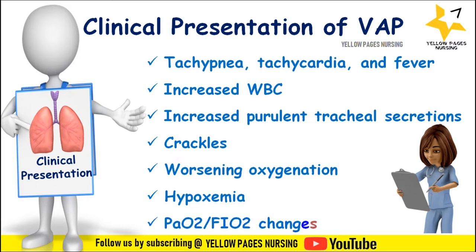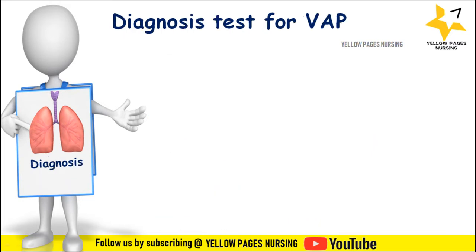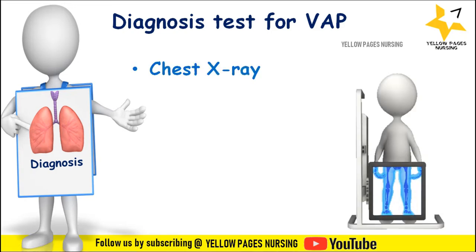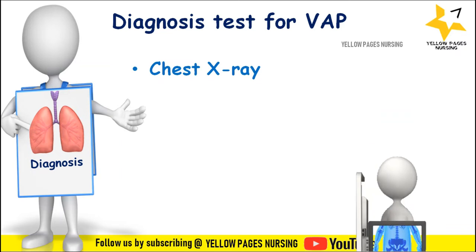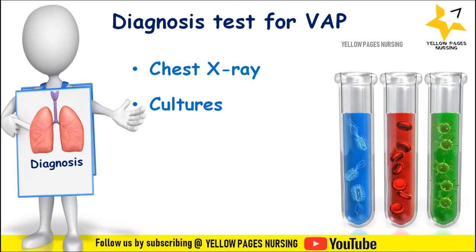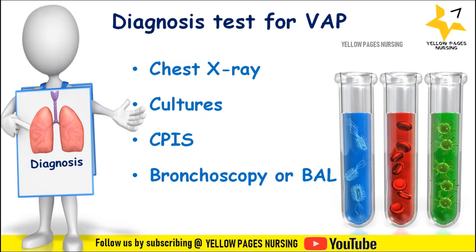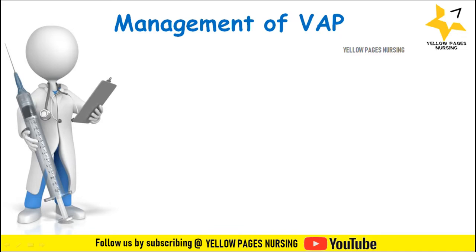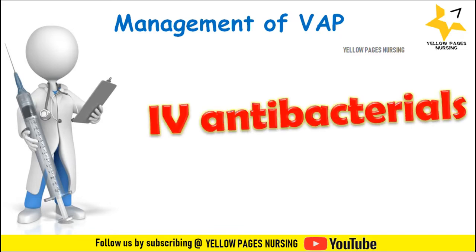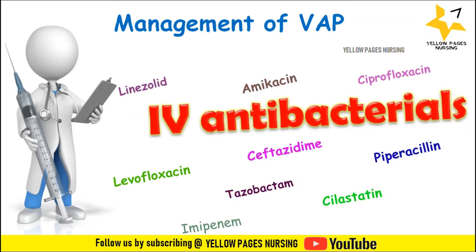How is VAP diagnosed? Through chest X-ray which shows new or persistent infiltrate, cultures such as tracheal aspirate and blood cultures, Clinical Pulmonary Infection Score (CPIS) above six, and bronchoscopy or bronchoalveolar lavage.